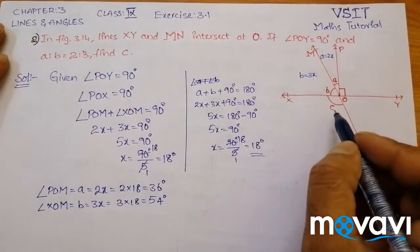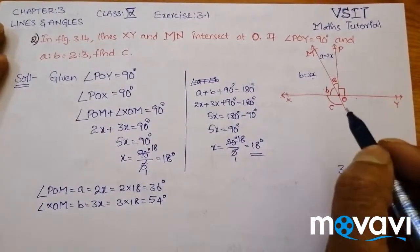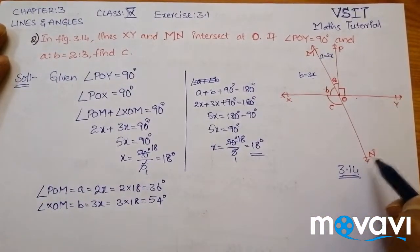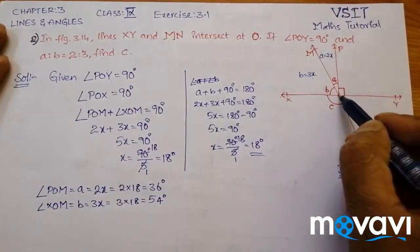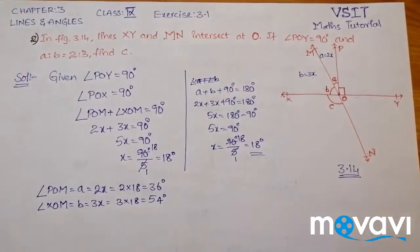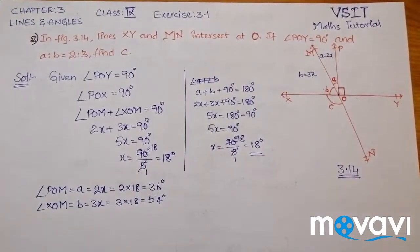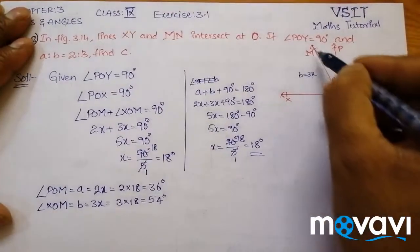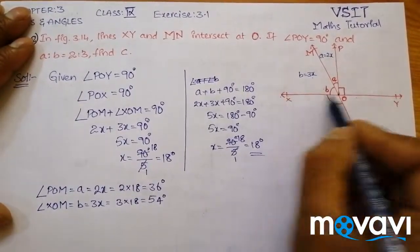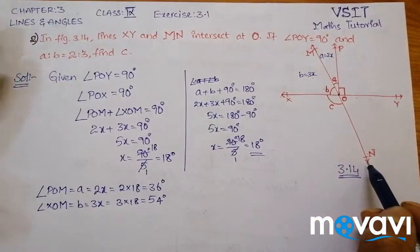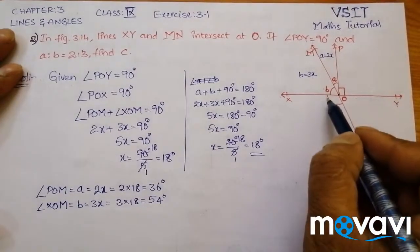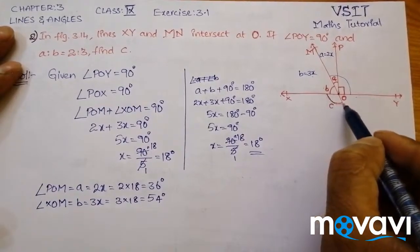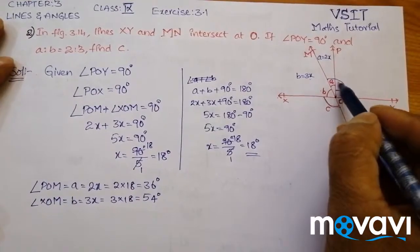Now we have to find the value of C. XY and MN are intersecting at O. When two lines intersect at a point, vertically opposite angles are always equal. In this picture, XY and MN intersect at O such that angle XON is vertically opposite to angle MOY. So this angle equals this angle, and we know angle POY is 90 degrees.